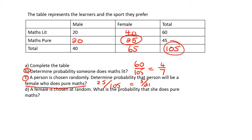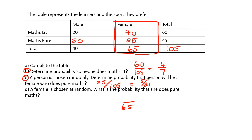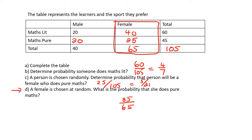Our last question says a female is chosen at random — so we're only looking at the females. There are 65 females in total, so we're only looking out of those 65 people. What is the probability that she does pure maths? Pure maths for females is 25, so we say 25 out of 65. It's important to understand the difference between this question and question C. In question C, a person is chosen — it could have been male, but it just happened to be female, and the total was out of 105. Here, it has to be a female, and out of those 65 females we ask the question. This gives you 5 out of 13.